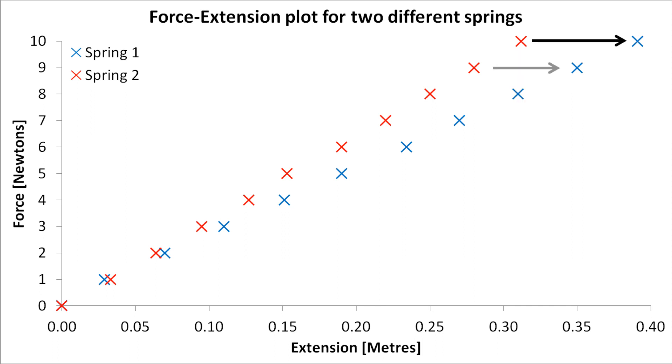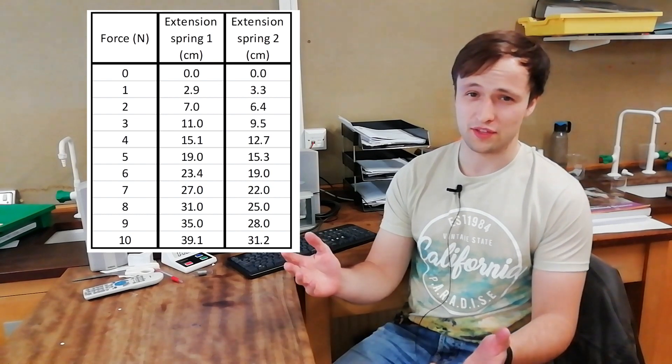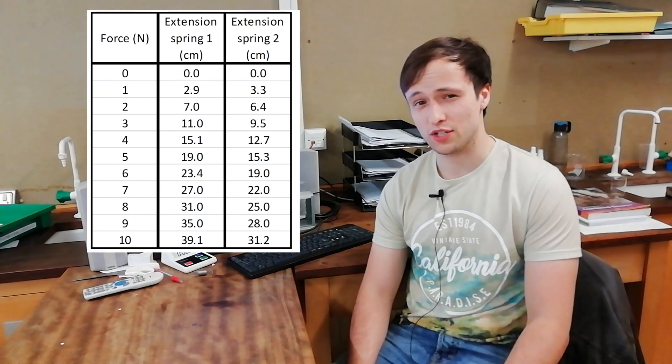And in general, spring 1 extends more than spring 2 for the same forces. When we put in the lines of best fit, it's even clearer, since the plot for spring 1 has a shallower gradient than the plot for spring 2. This is nothing new, since we can even see it in the original data table.